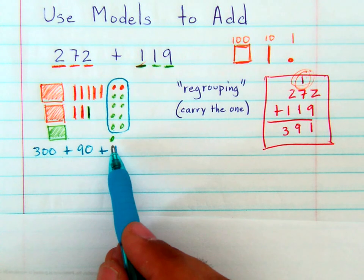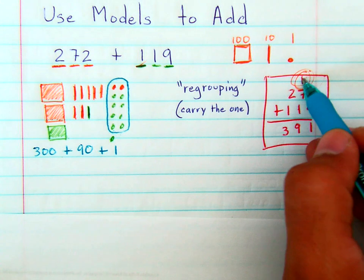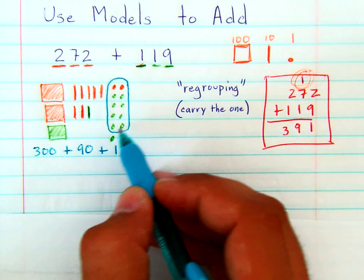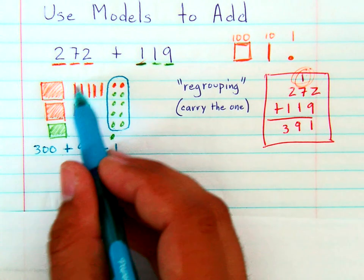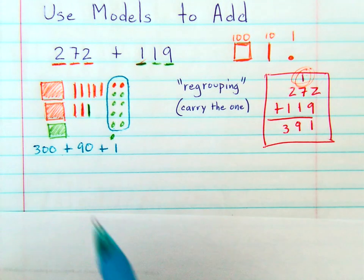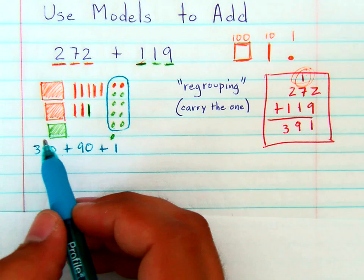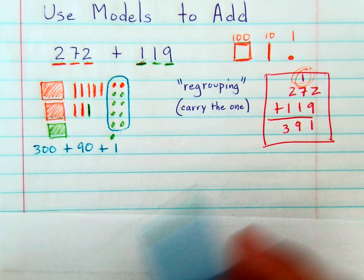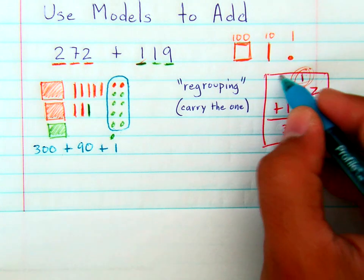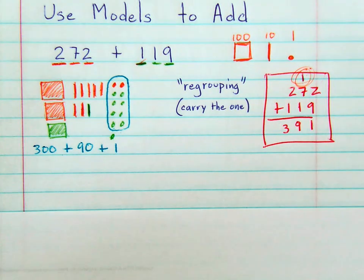But for this lesson, I want them to see why they carry the 1 by regrouping. And in some questions, you're going to have to regroup tens to make another 100. And later regrouping hundreds to make a thousand, which is carrying the 1 across place values. So that is what I've asked students to do.